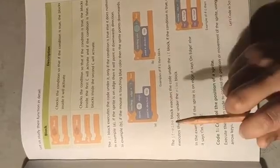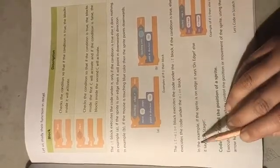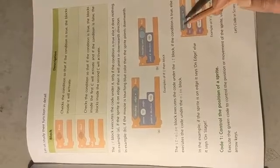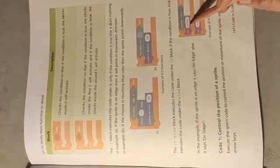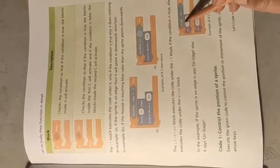The if-else block executes the code under the if block if the condition is true; else it executes the code under the else block. In the example, if the sprite is on the edge it says 'on edge', else it says 'on stage'. If the if block is true this will be executed, and if it is false the else part will be executed.